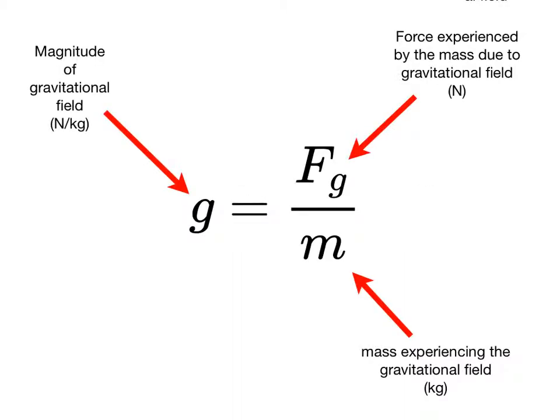A gravitational field will cause a mass placed in that field to experience a force. This equation is really the definition of gravitational field strength. It's the force per unit mass experienced by a mass placed in the field. The symbol is a lowercase g, you're familiar with that, and the units are newtons per kilogram.